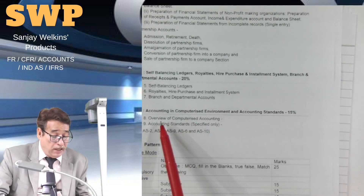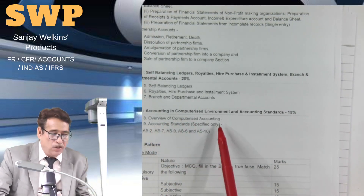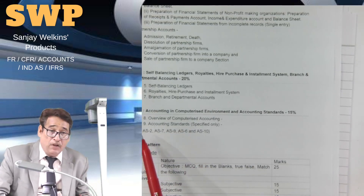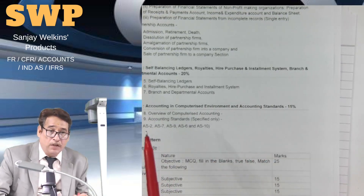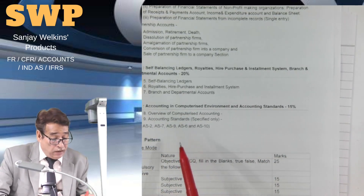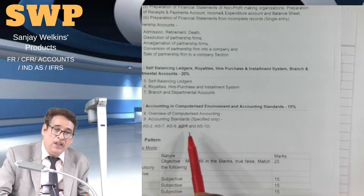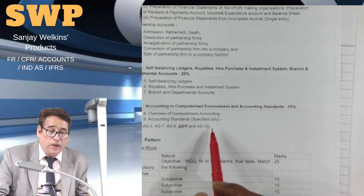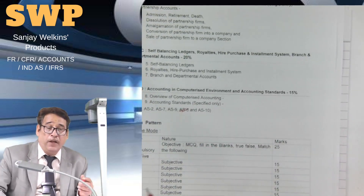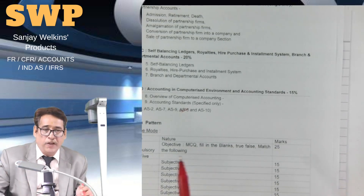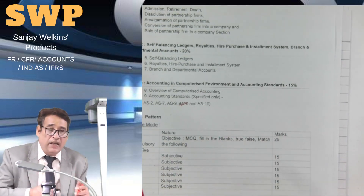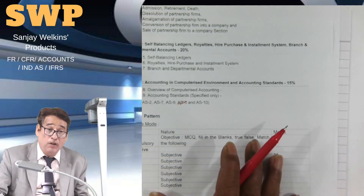Section D carries 15 percent marks, covering an overview of computerized accounting — generally you get a theoretical question on advantages of computerized accounting or software. Then there are accounting standards: AS1 on disclosure of accounting policy, AS2 on inventory valuation, AS7 on contracts, AS9 on recognition of revenue, and AS10 — note that AS6 is no more, having been submerged into AS10, which deals with property, plant and equipment, encompassing guidelines on both PPE accounting and depreciation.